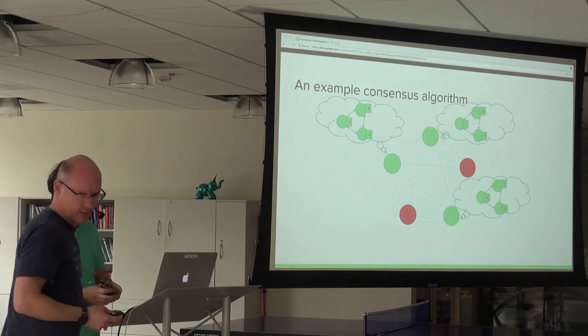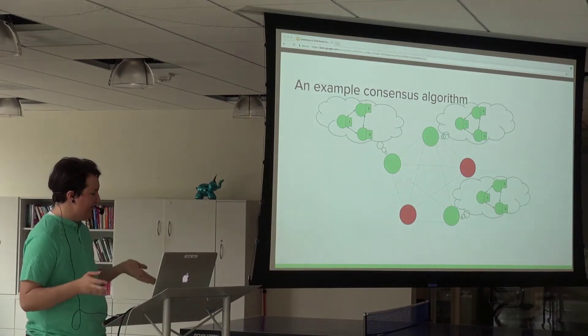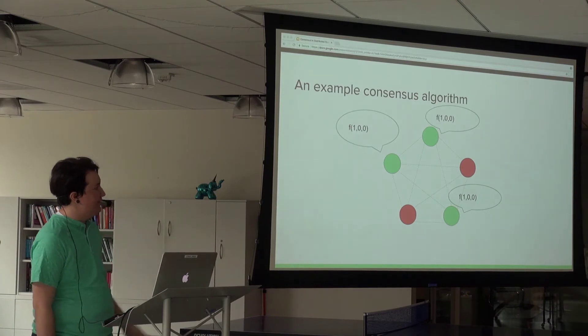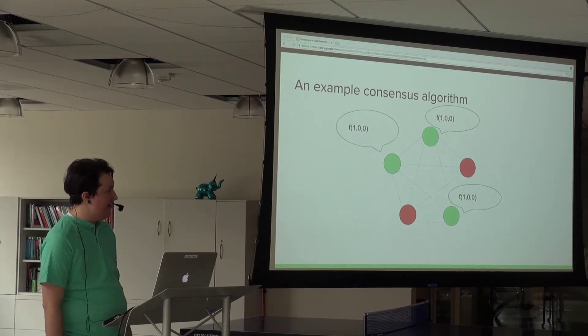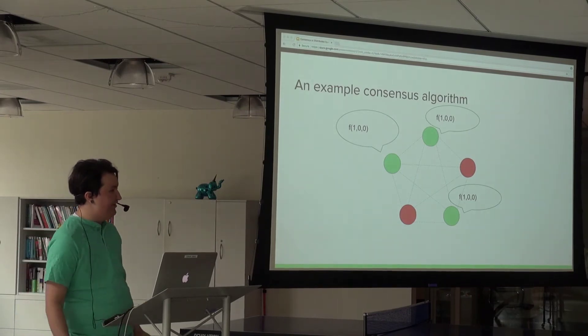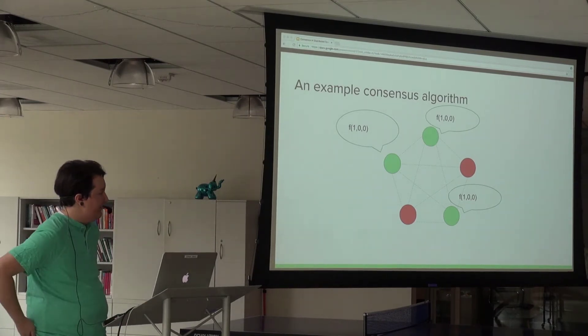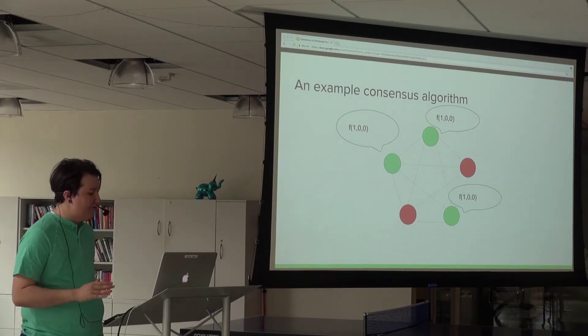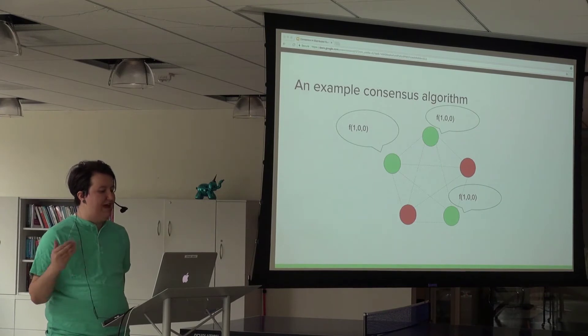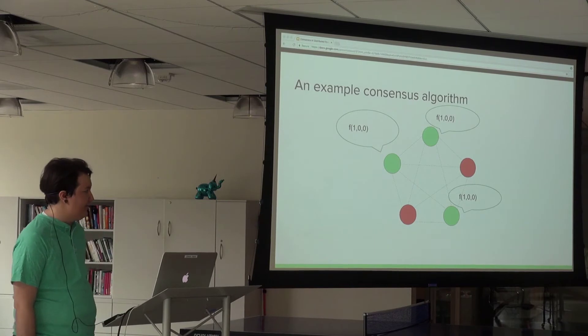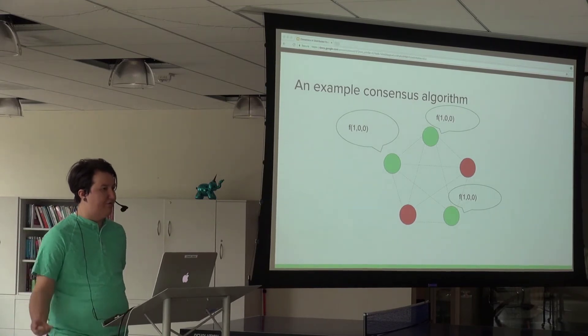Each node successfully builds a graph of the nodes it's successfully communicated with and applies some function - maybe majority rules or a leader wins. They apply a function to the values the live nodes have and come up with a final answer. This algorithm works as long as over half the nodes are up at the start and no node goes down during consensus formation.